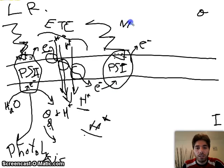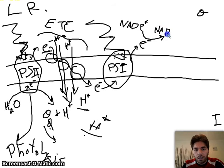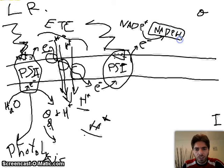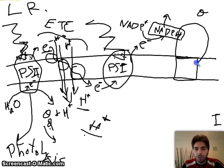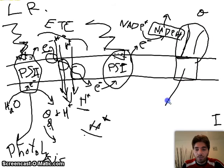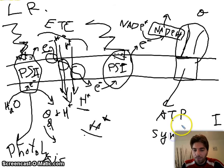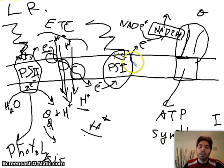Photosystem 1 lost electrons and gained them back. The electron that PS1 lost will be directly accepted by the electron carrier NADP+, which when it carries this electron becomes NADPH. This is the first important molecule formed from the light reaction, and it will go to the Calvin cycle to be used. We still need to make ATP. For that we have a complex molecule called ATP synthase — since it ends in '-ase,' it is an enzyme.